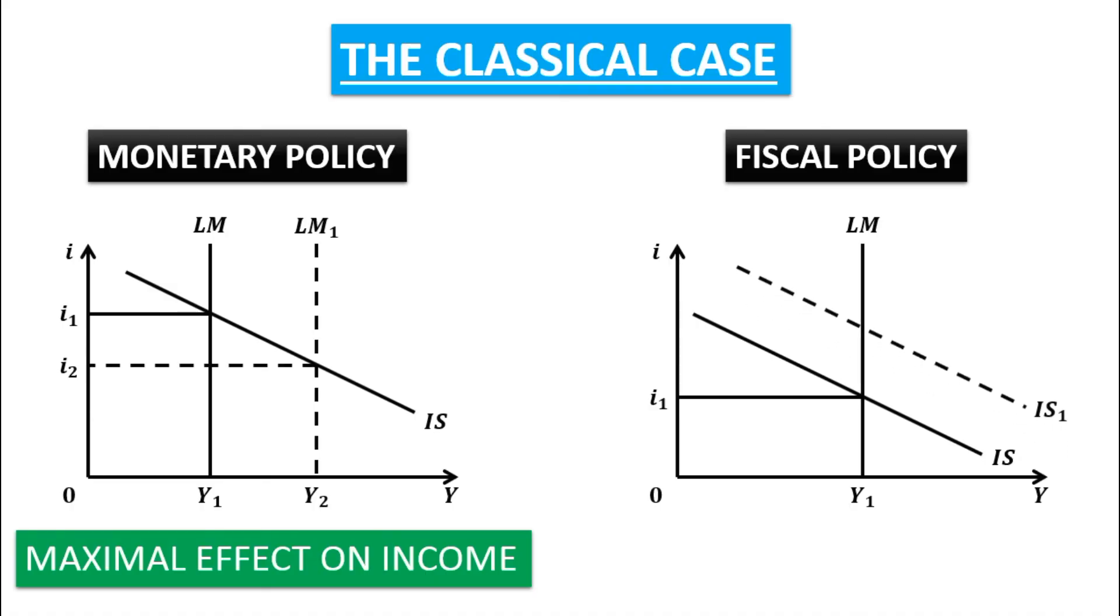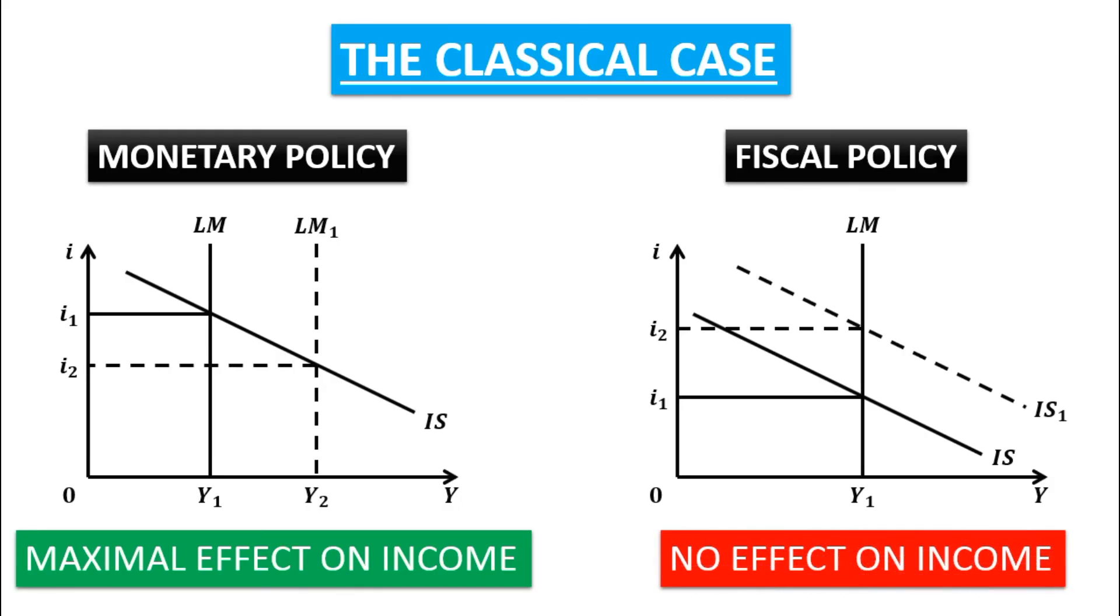As you can see, IS curve has been shifted to IS1, new equilibrium interest rate is OI2, and in this case, no effect on income.